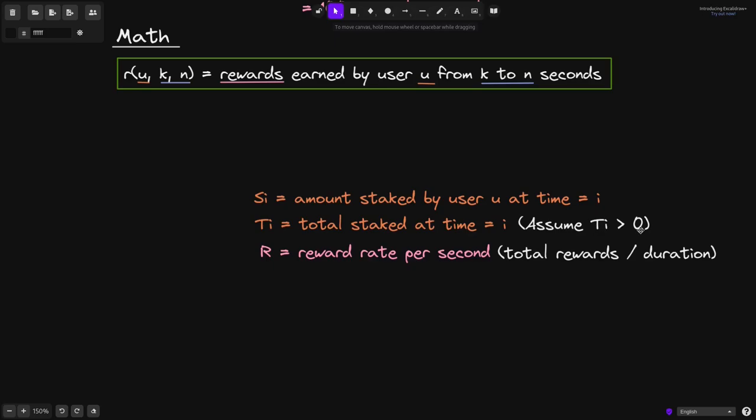And here we'll assume that T of i is always greater than zero, and R is the reward rate per second. This will be the total rewards that is being paid out divided by the duration in seconds.